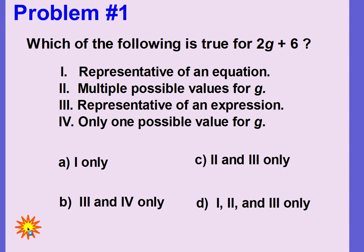The correct answer is C — two and three only. So let's look at what is not correct. Number one says that it is representative of an equation. That's not true because an equation has to have that equal sign, and there is no equal sign here.